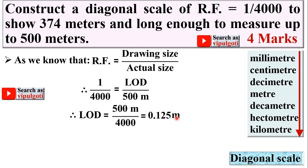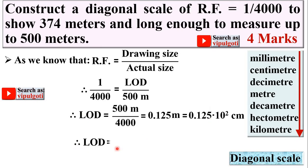We know that 1 meter is equal to 10² centimeters. Applying that conversion: LOD equals 12.5 centimeters. So now you can start the diagonal scale with the length of drawing equal to 12.5 centimeters.